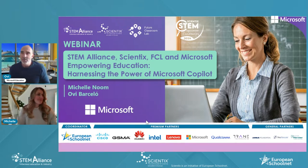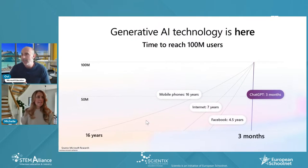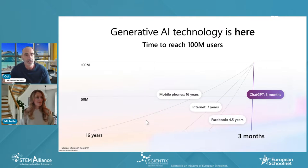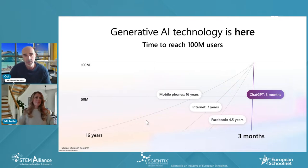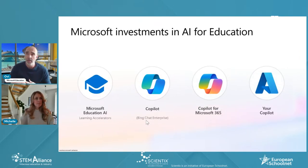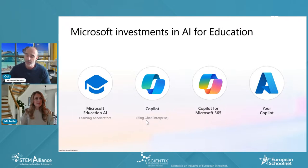The first thing to say is why AI is here and why everybody is talking about it. While big technologies like mobile phones, internet, or even Facebook took many years to reach 100 million users, ChatGPT and the first generative AI for consumers only took three months. That is the high impact AI is having in society. We embrace it at Microsoft at different levels. This slide could serve as an agenda of what we are going to share with you today.